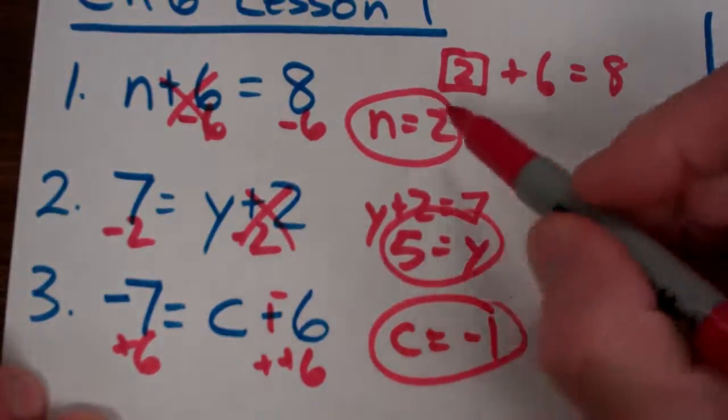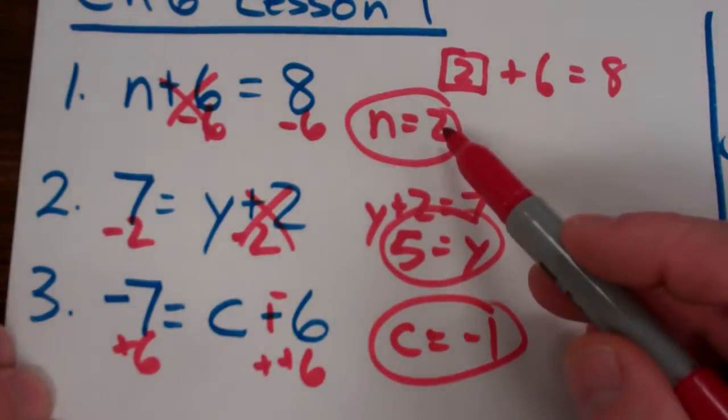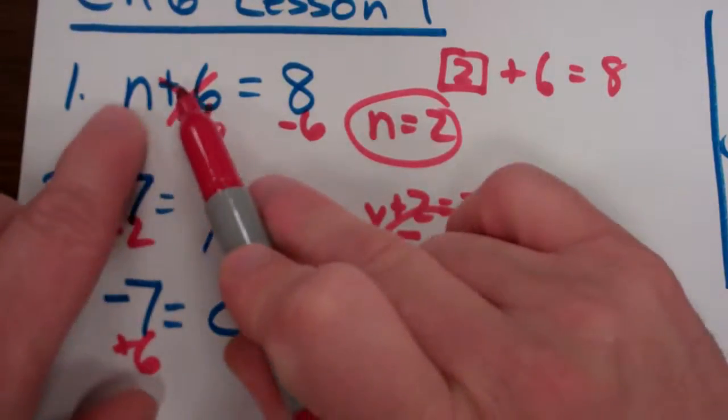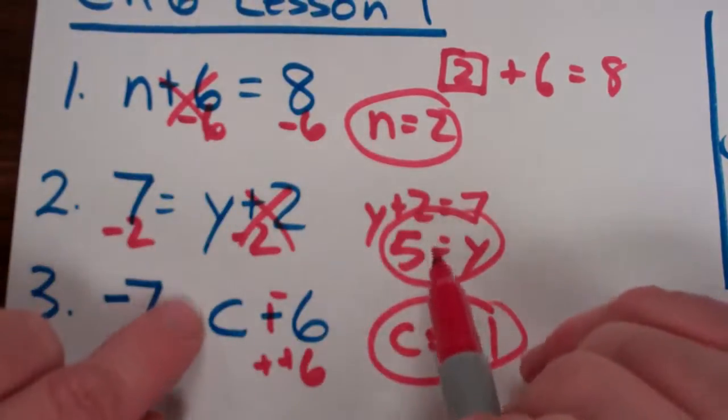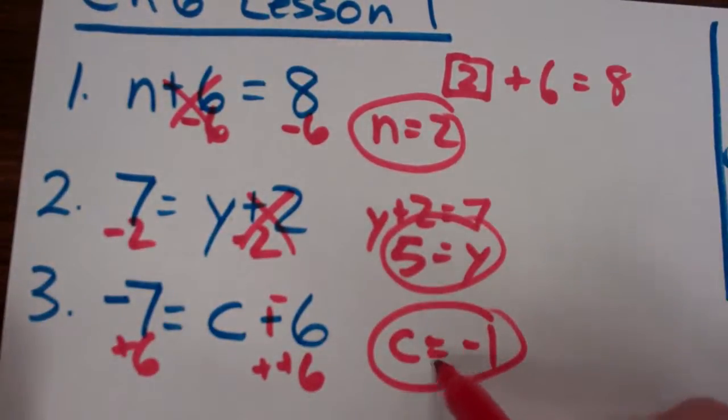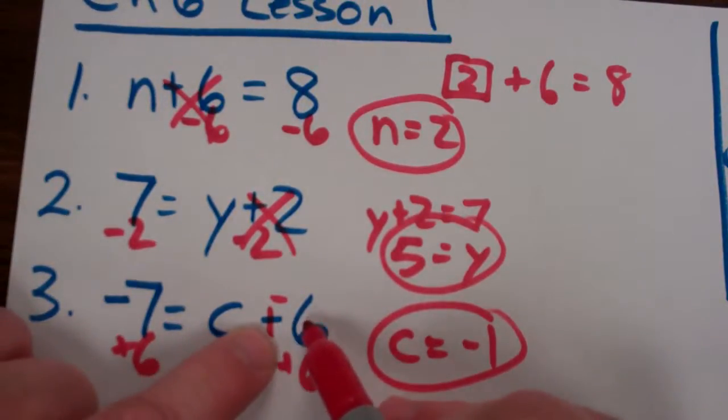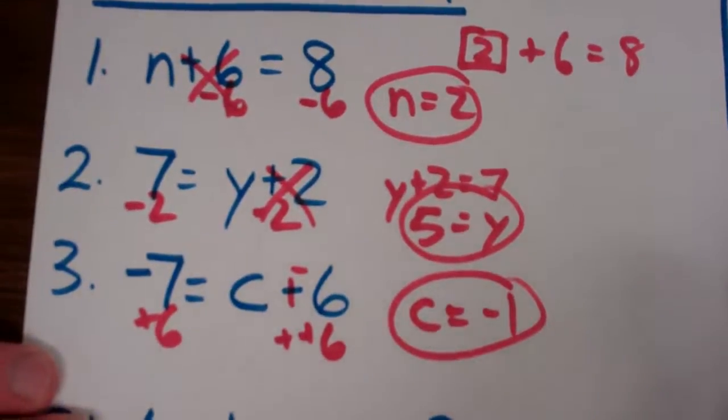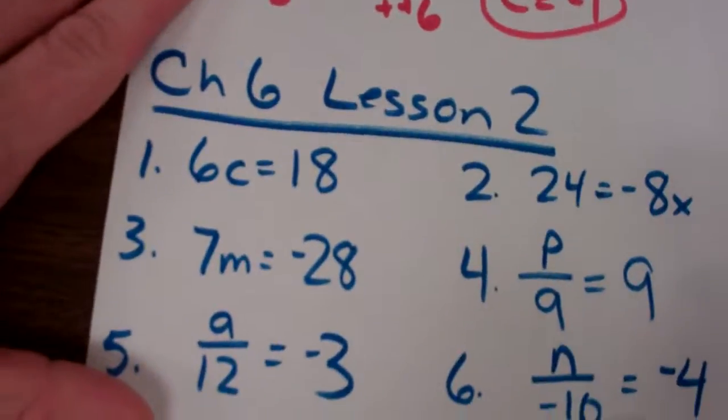And once again, any time you have these, you can always plug your answers back in to make sure they work. So if I put 2 back in, n plus 2, well 2 plus 6 is 8. If I put in 5, 5 plus 2 is 7. If I put in negative 1, negative 1 minus 6, or negative 1 plus negative 6 is negative 7.